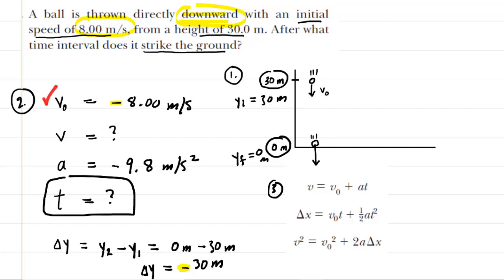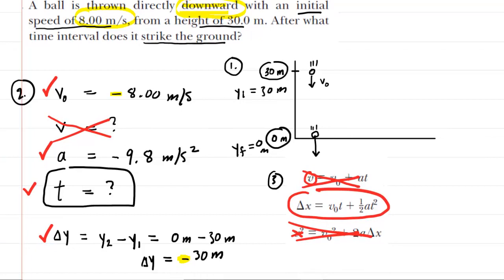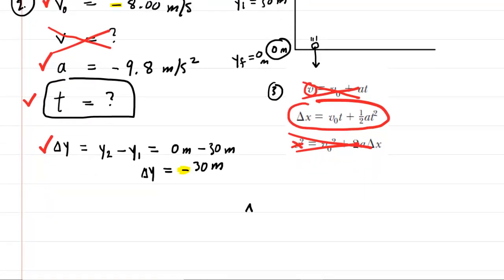We know the initial velocity, the acceleration, and the displacement, and we are looking for the time. So the final velocity is not part of our concern right here. What we could do is cross out any equation that contains the final velocity, because we're not really interested in it. So that would be the first and the third equation, leaving us with the second equation, which is the correct one. Keep in mind that it's written in terms of delta x rather than delta y, but it's the same equation. So we'll write delta y equals the initial velocity times the time plus one-half acceleration times time squared.